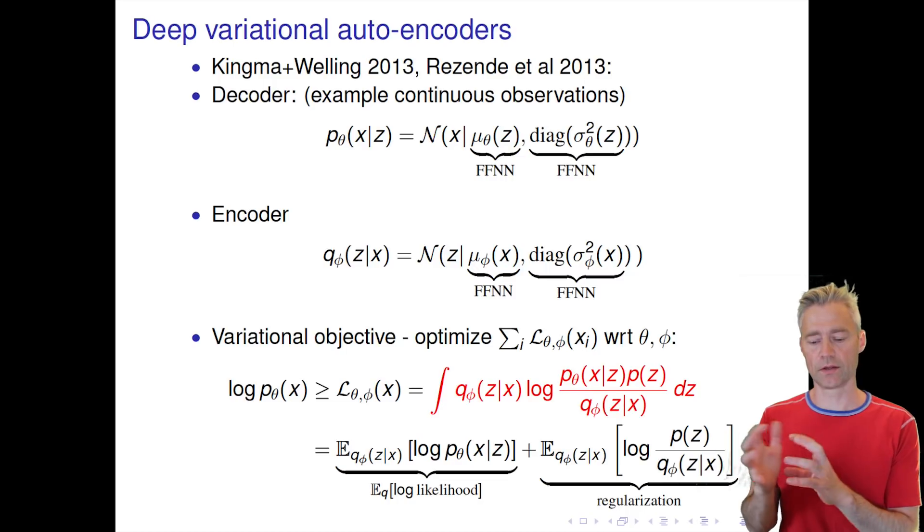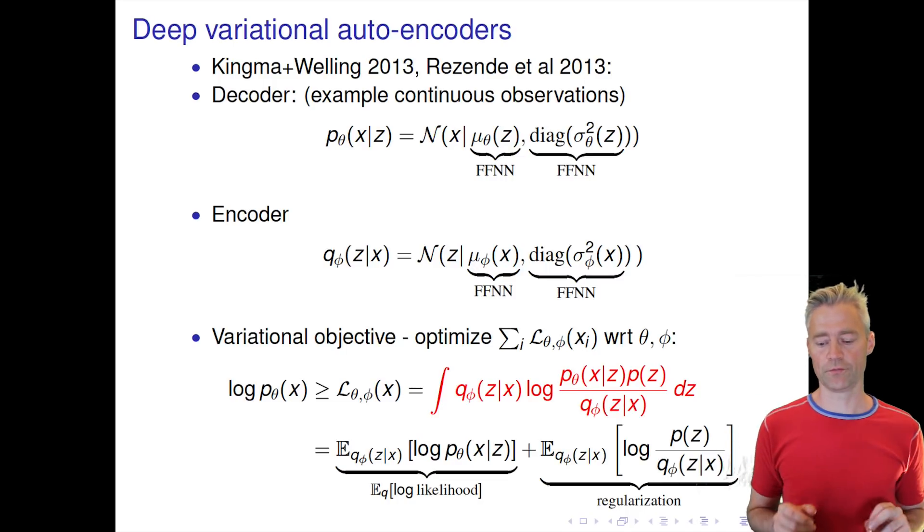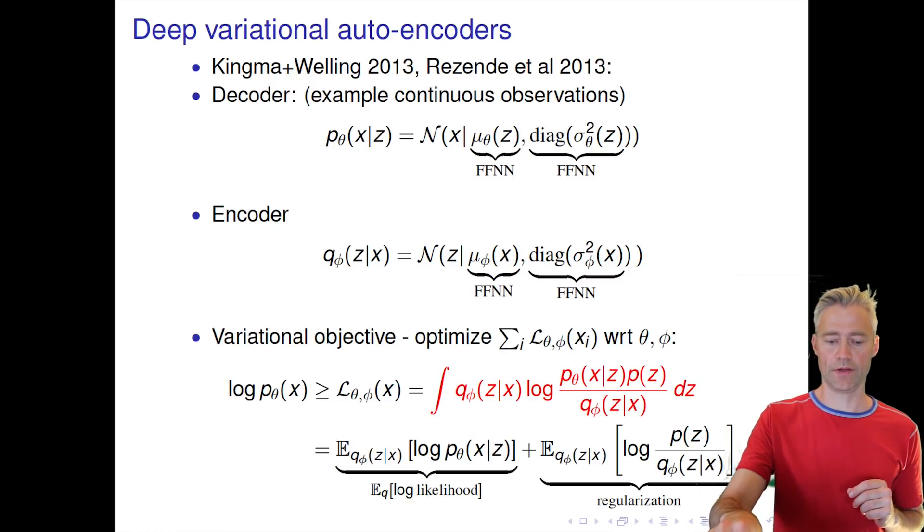So optimizing the variational bound is a trade-off between fitting the data and getting closer to the prior, the simple normally distributed manifold.